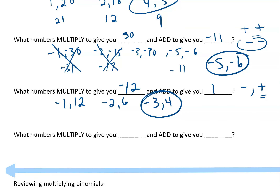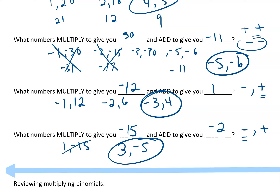What multiplies to give you negative 15 and adds to give you negative 2? They multiply to give you a negative, so we have a negative and a positive. But the result when we add them is negative, so we must have more negatives than positives — the bigger number is going to be negative. It could be 1 and negative 15, but that adds to negative 14. 3 and negative 5? Yes, that adds to negative 2. So that's our factor pair. Keep that skill in mind, because we're going to use it in a little bit.